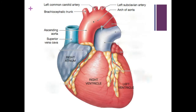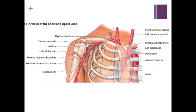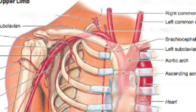Off the arch of aorta, our very first branch is the brachiocephalic trunk, which we see right here. The middle branch is the left common carotid artery, and the last branch is the left subclavian artery. Zooming in, the brachiocephalic trunk is going to branch into the right common carotid artery and the right subclavian artery.